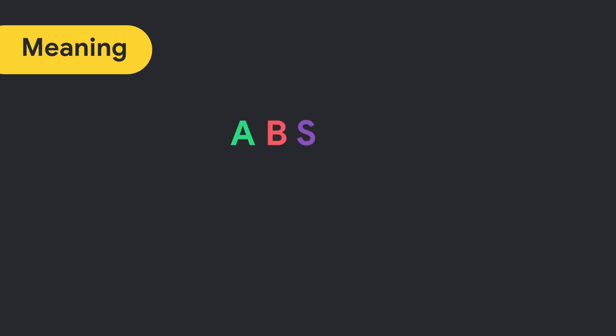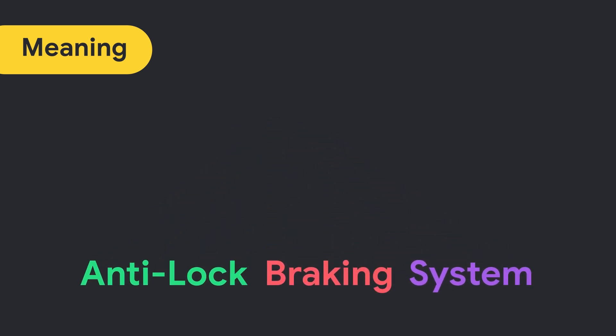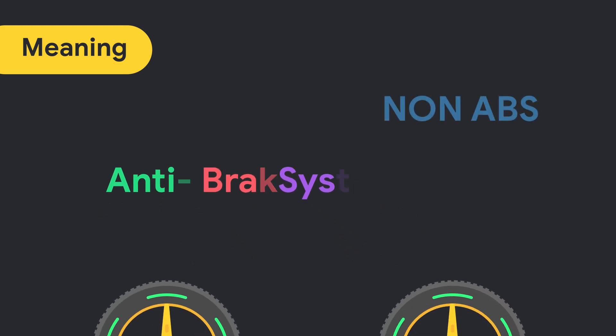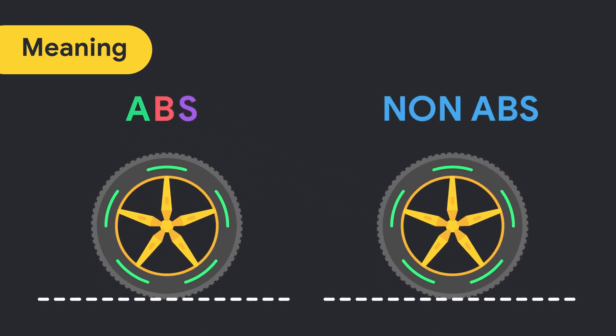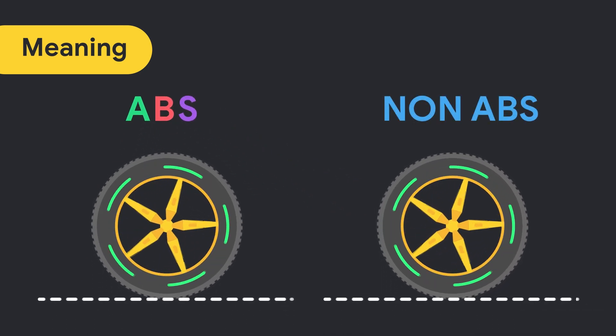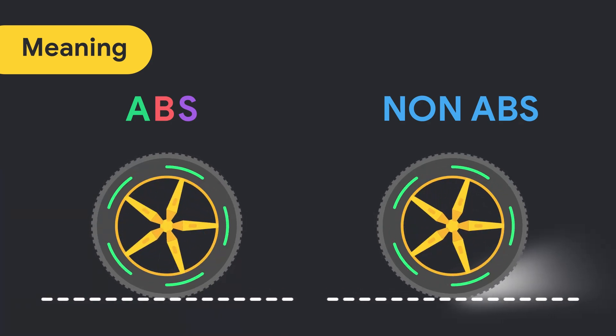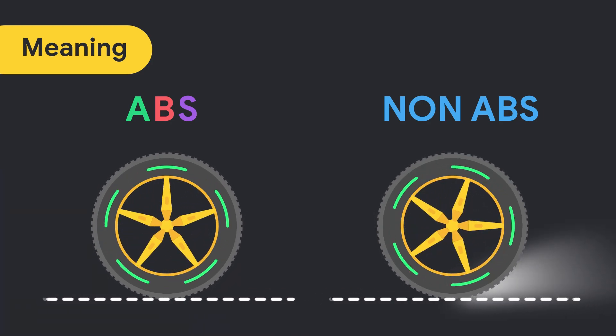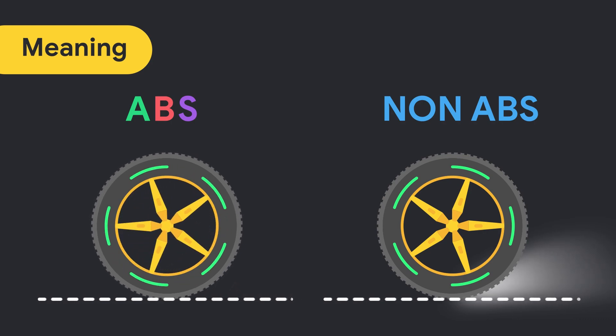ABS stands for anti-lock braking system and the main function of ABS is to prevent the wheels of a vehicle from road skid while braking. This is achieved by eliminating the locking of wheels while braking. So, it's called anti-lock braking system.